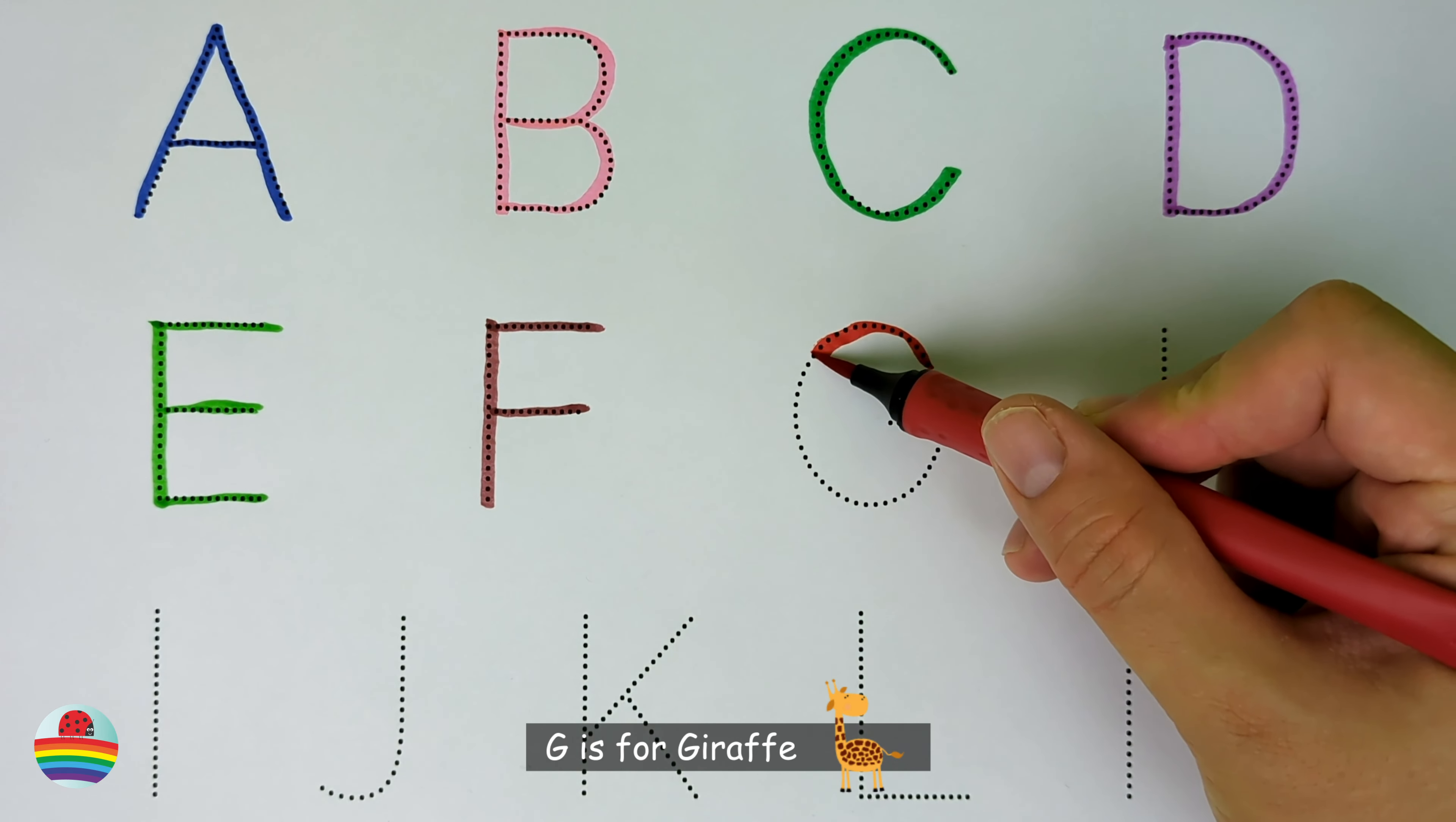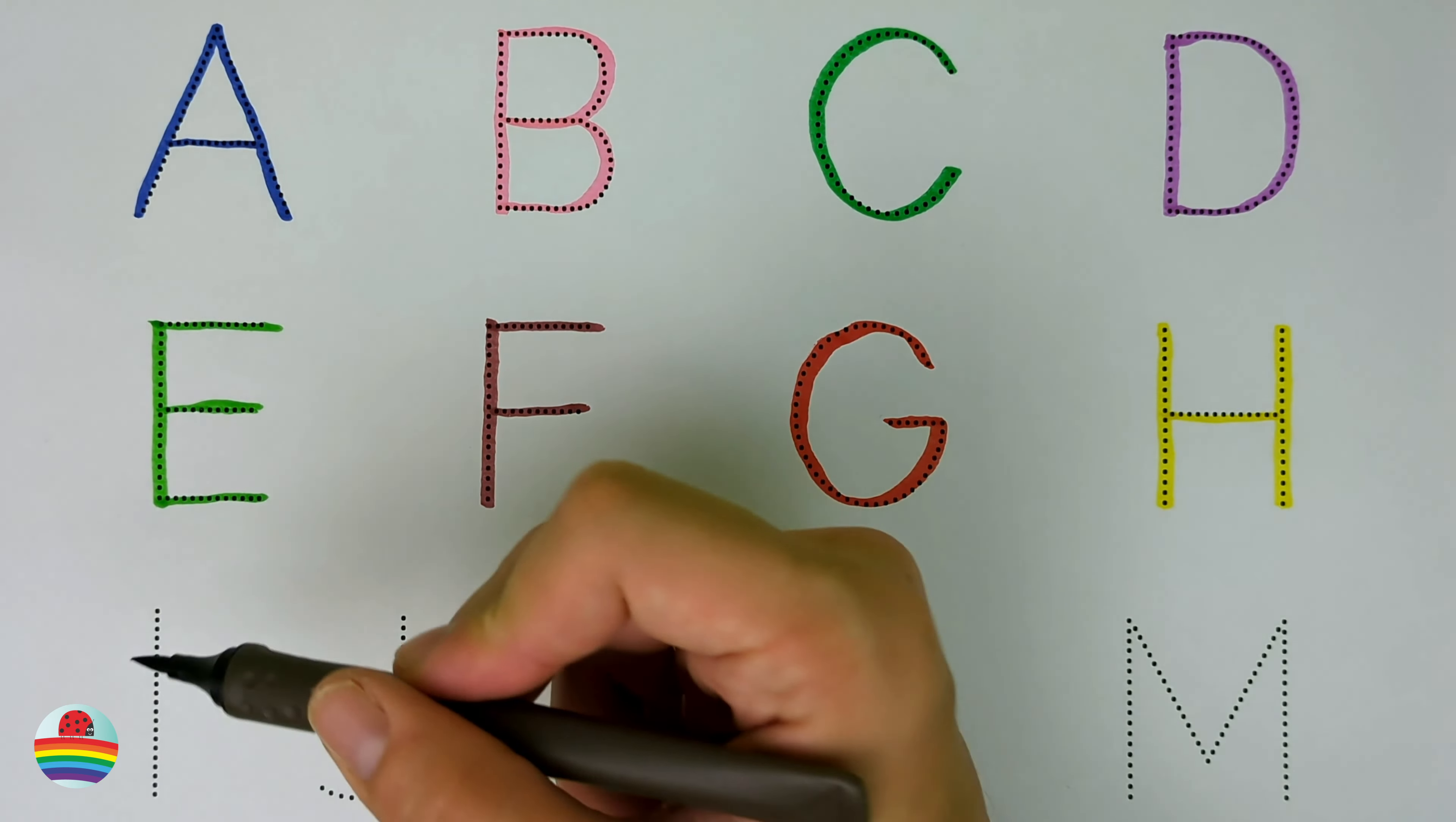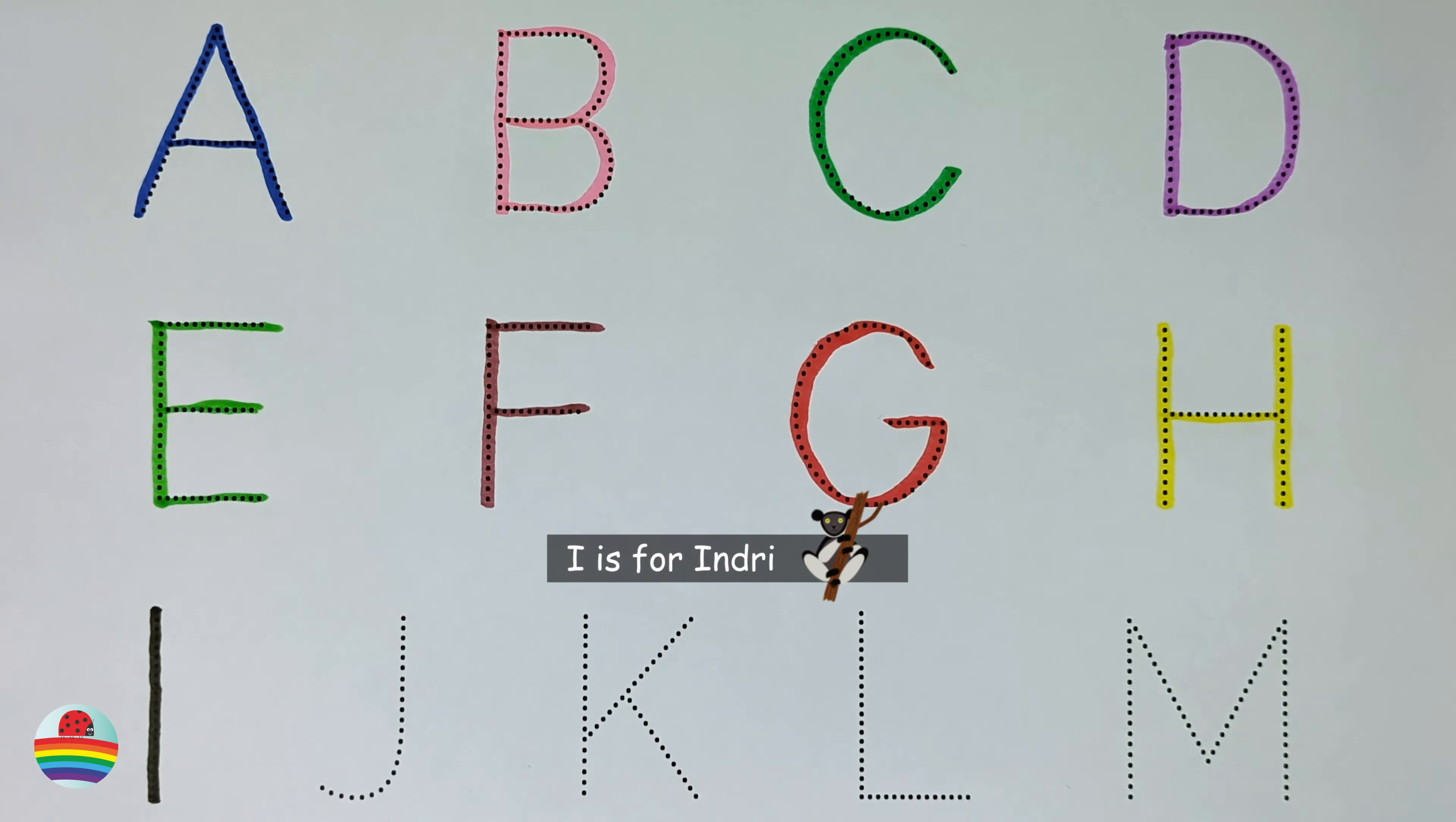G. G is for giraffe. G. H. H is for horse. H. I. I is for injury. I.